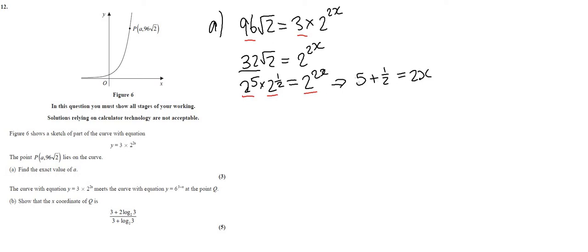Five and a half, written as a fraction, is 11 over 2, and that equals two x. So x equals 11 over 4. That is our value of a for part a.